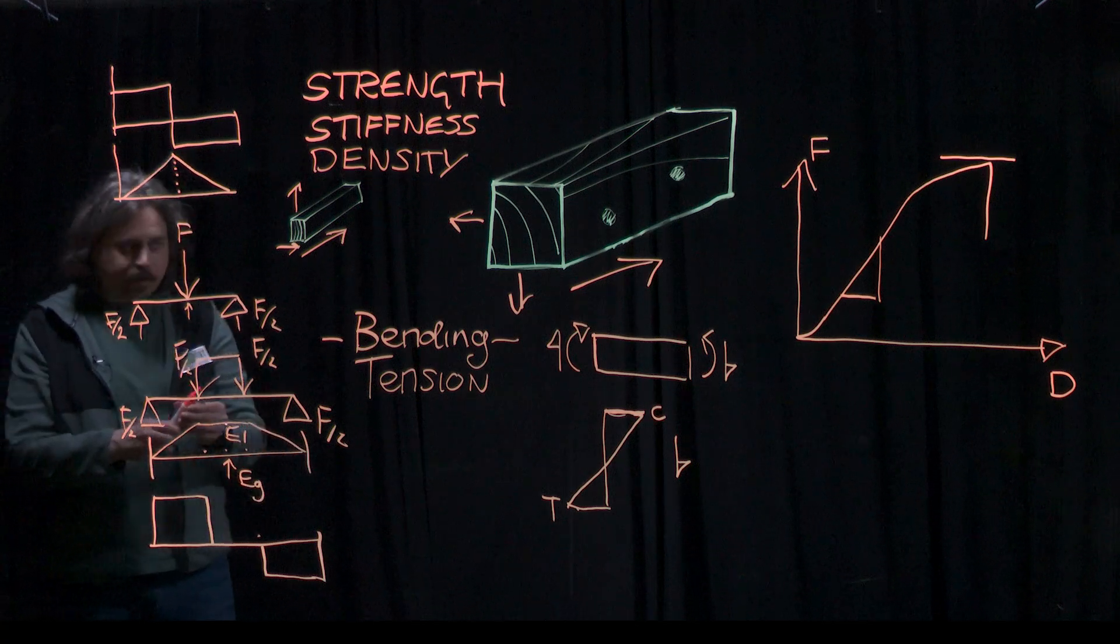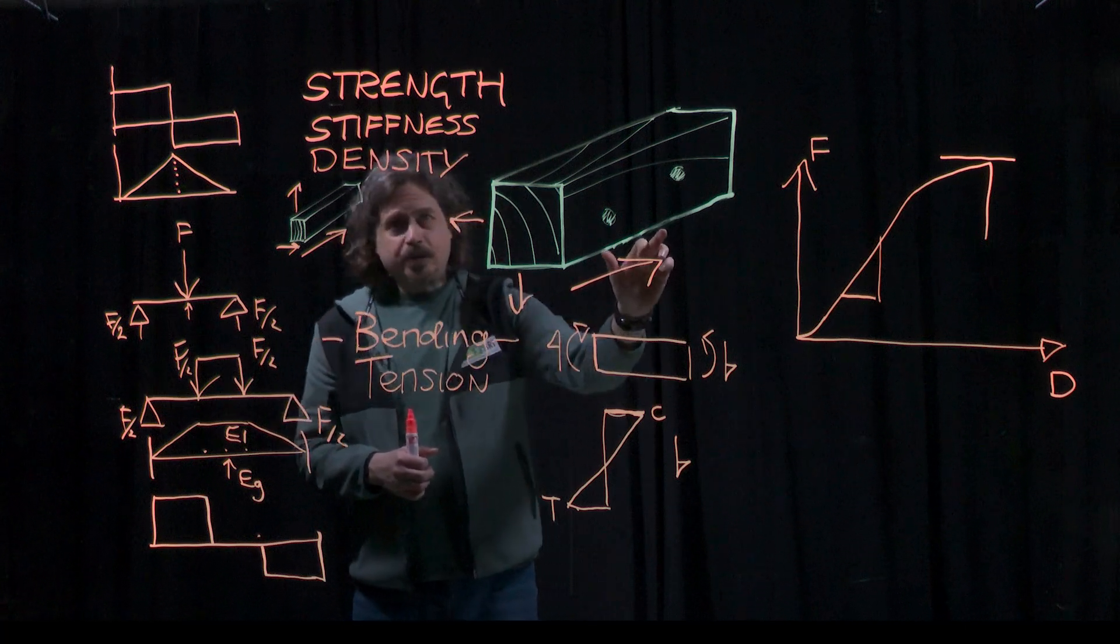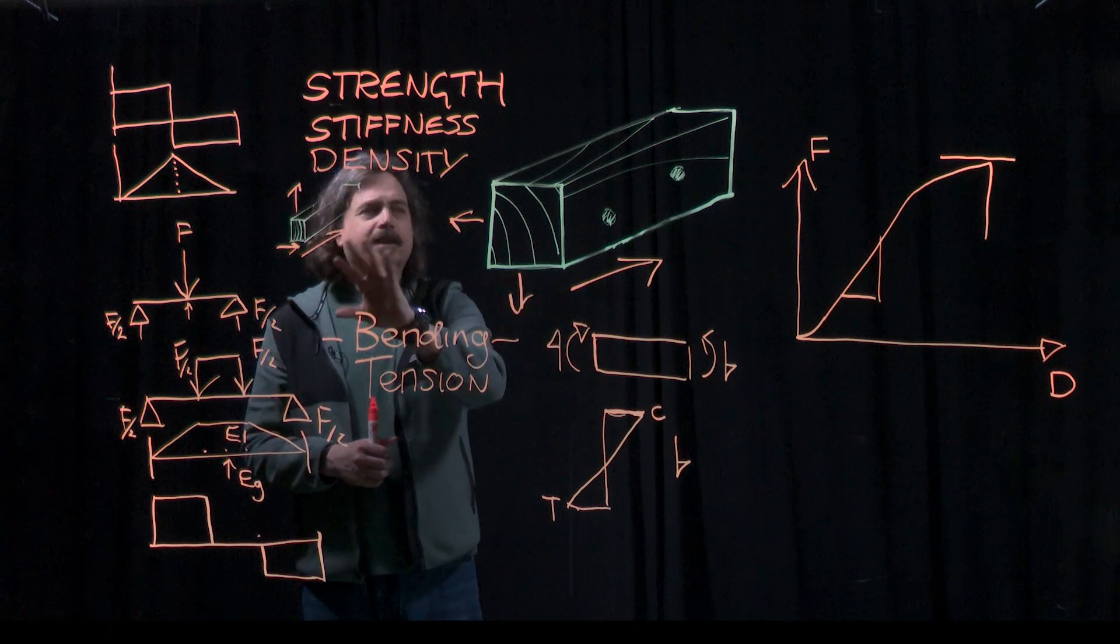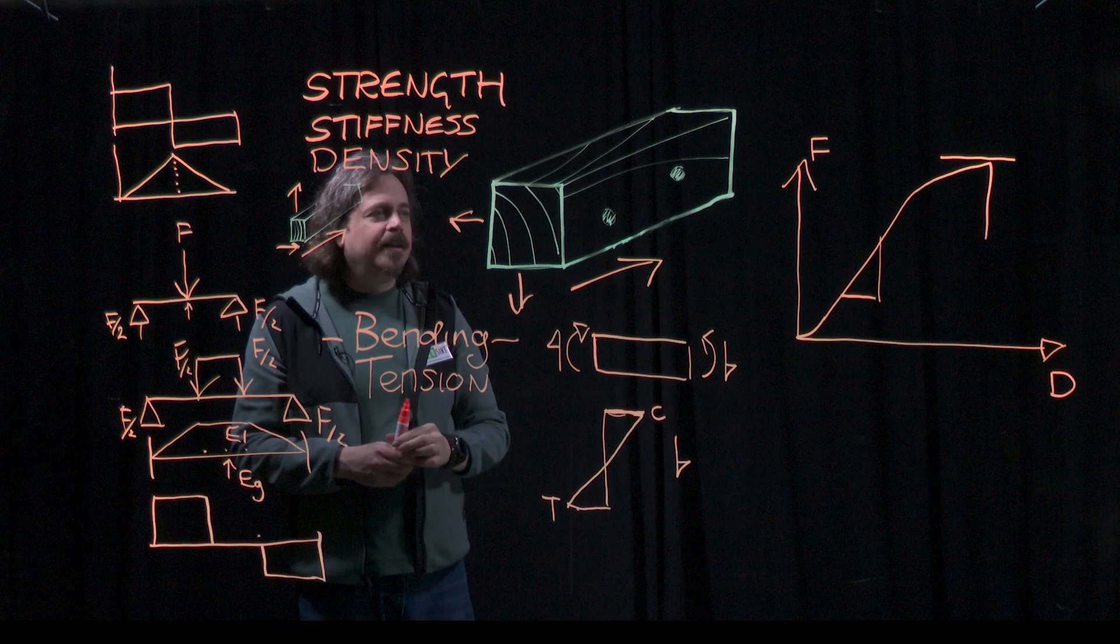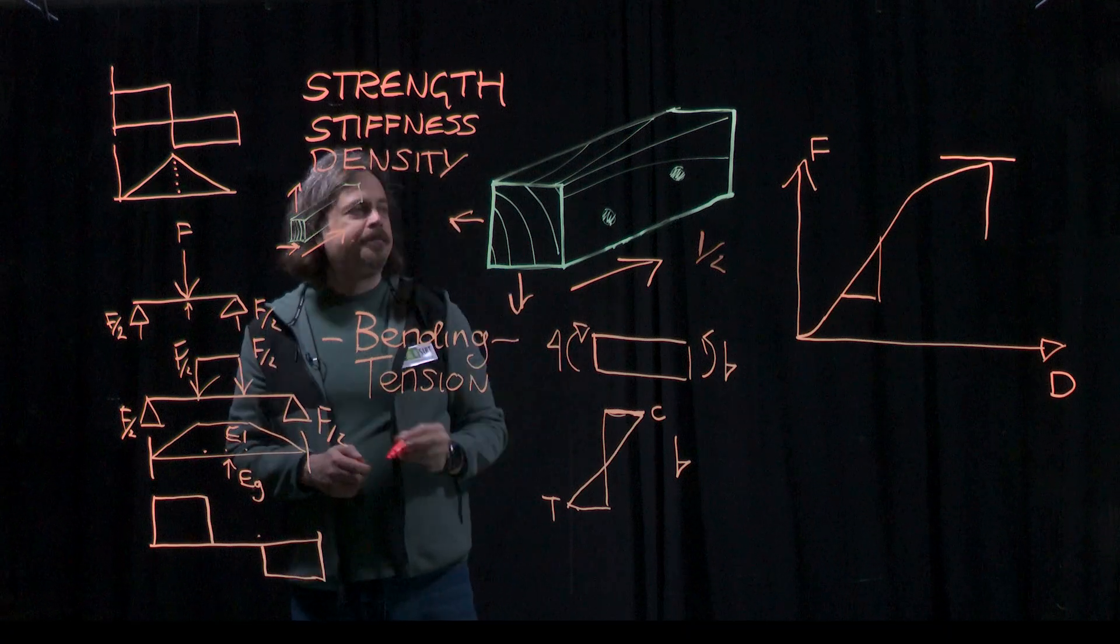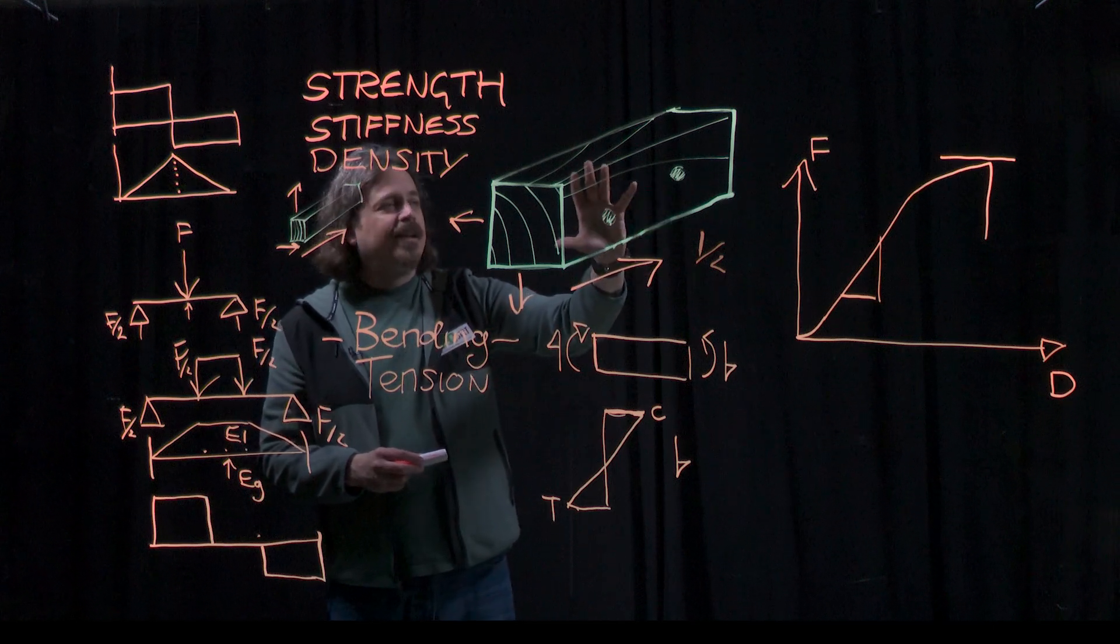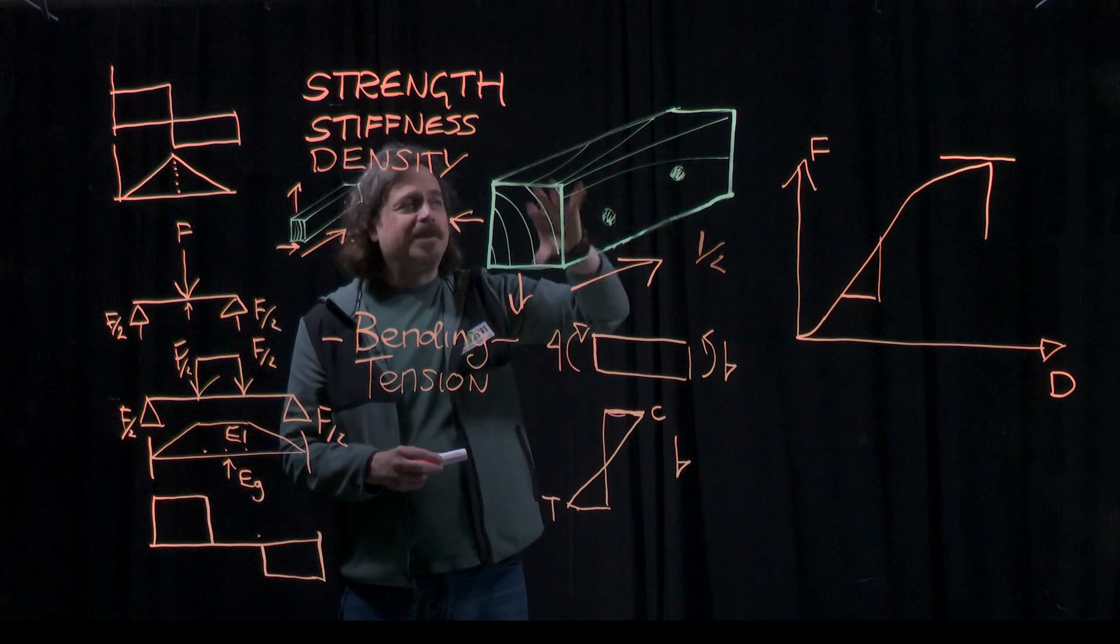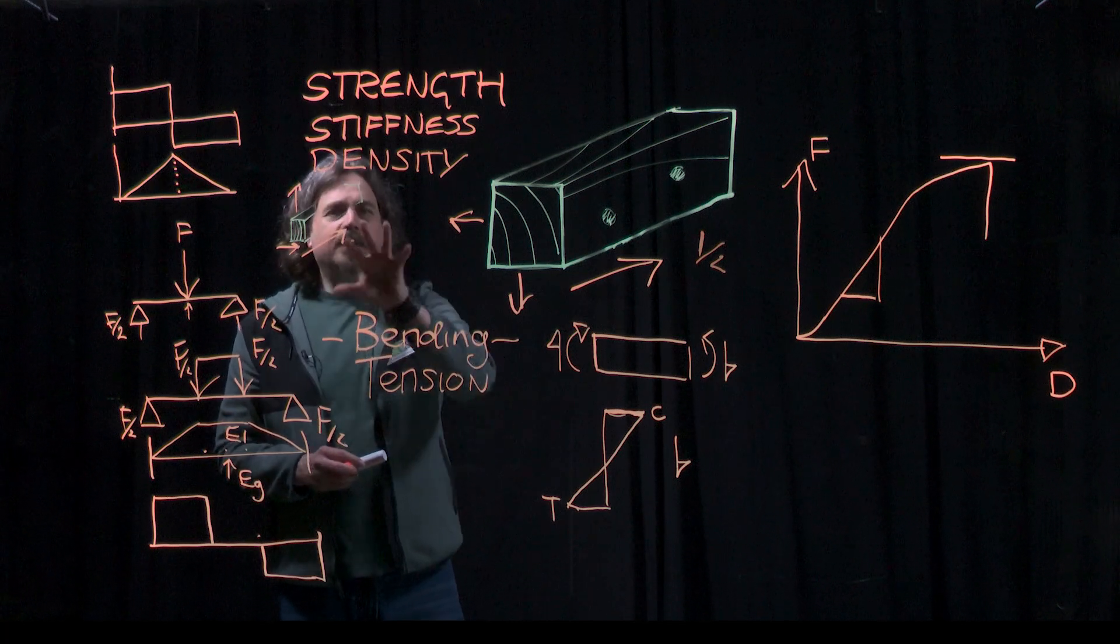But actually, the key thing to understand is that you need to realize that there's a difference between small clear data and full structural size data, especially for strength. For stiffness, you get more or less the same value between the two. But for strength, you get a big difference. As a rule of thumb, this is usually about half of the strength of this one. And that's because this has defects and variation of wood properties even within the clear wood, whereas this one is more uniform. But you still get variation in the results.